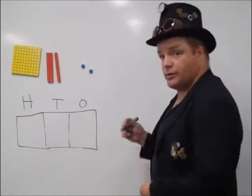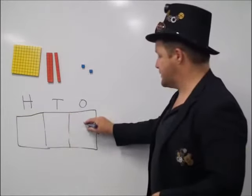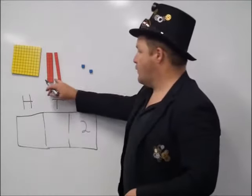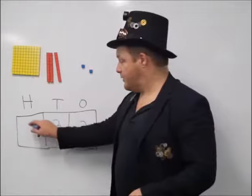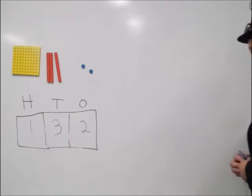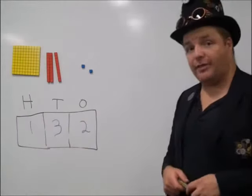So, I have one, two ones, or units. I have one, two, three tens. And I have one hundred. And at the moment, I have one hundred and thirty-one.